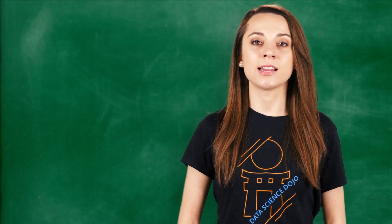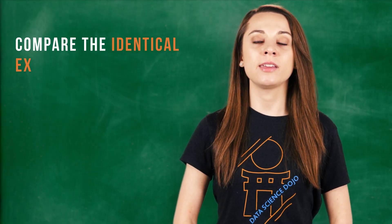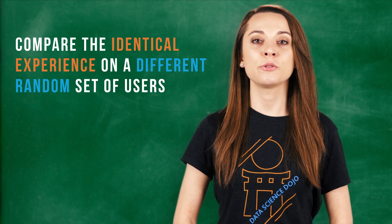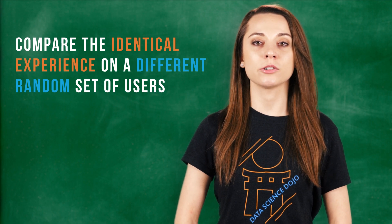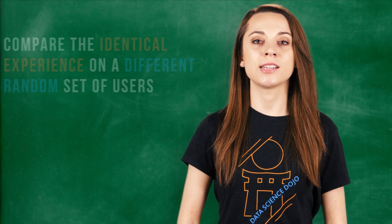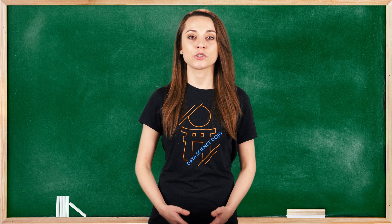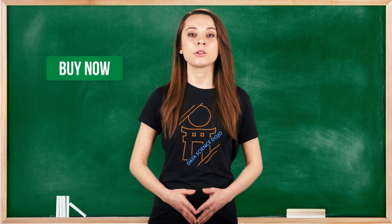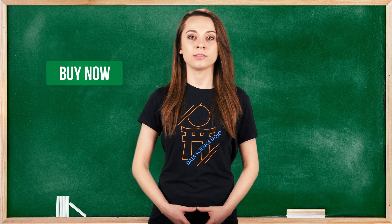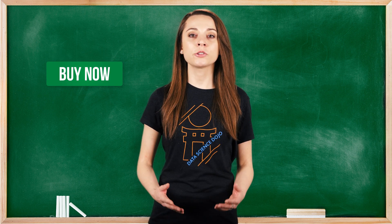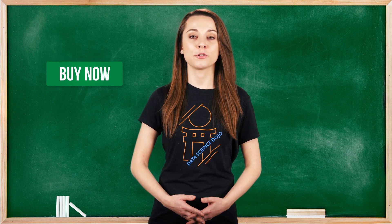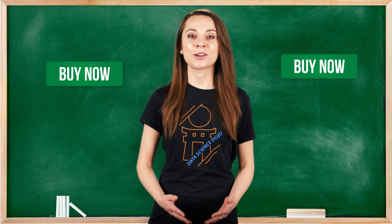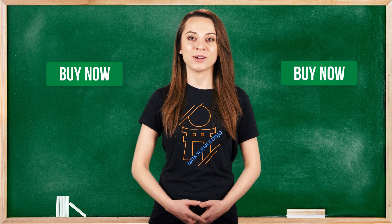An AA test is when you compare the identical experience on a different random set of users. For example, your original version, version A, your control, is a green buy now button, and your alternate version, version B, your treatment, is also a green buy now button.